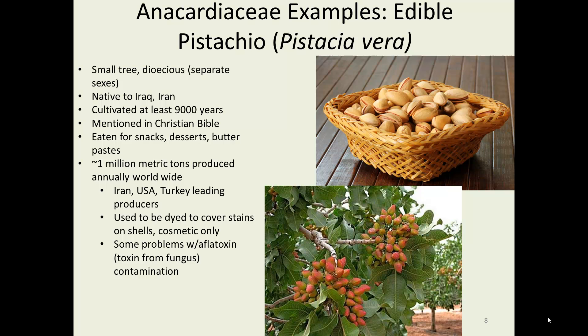Pistachio is another great snacking food. These are mostly used as snacks, but there are some desserts and pastes made from them. They have been cultivated for at least 9,000 years — and if that far back, probably even longer. They're native to Iraq and Iran, and are actually mentioned in Genesis in the Christian Bible. Today, Iran, the USA, and Turkey are the leading producers. If you remember the 60s and 70s, pistachios always came dyed pink — that was just to cosmetically cover up bruising that occurred when harvested by hand, and it didn't have any real function.